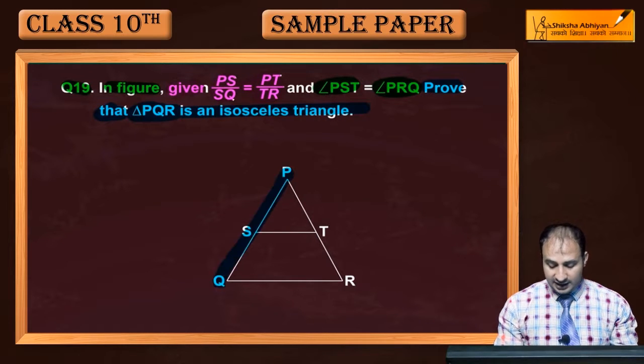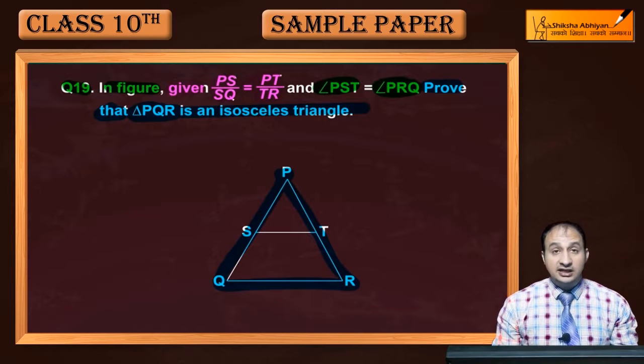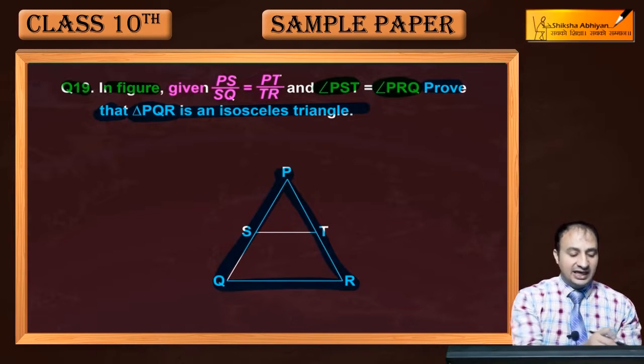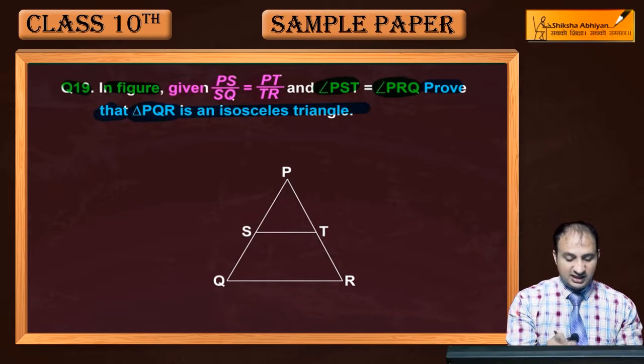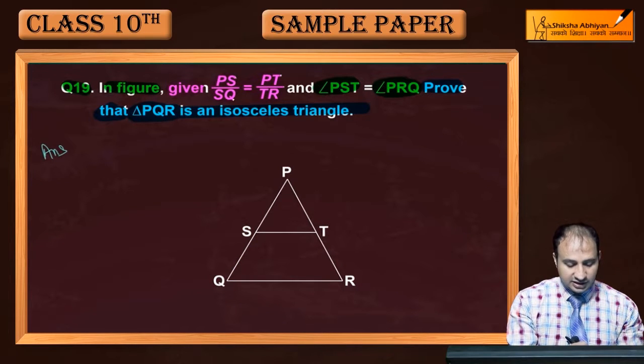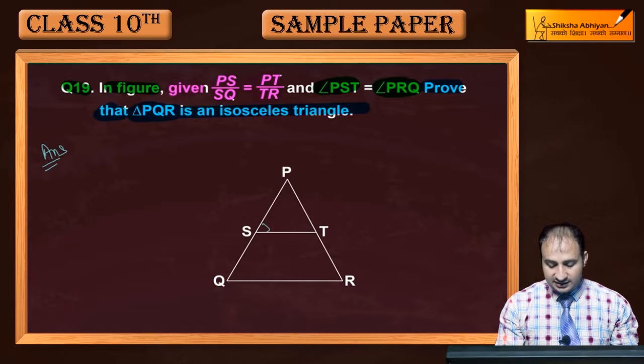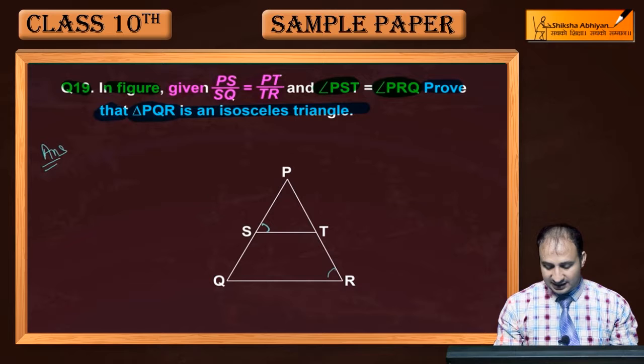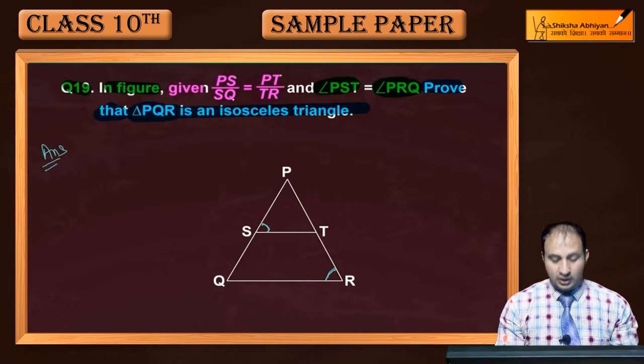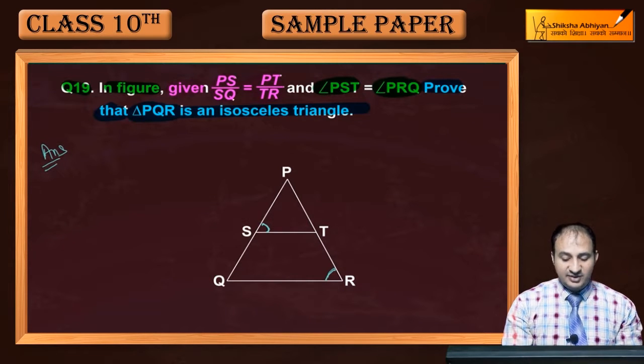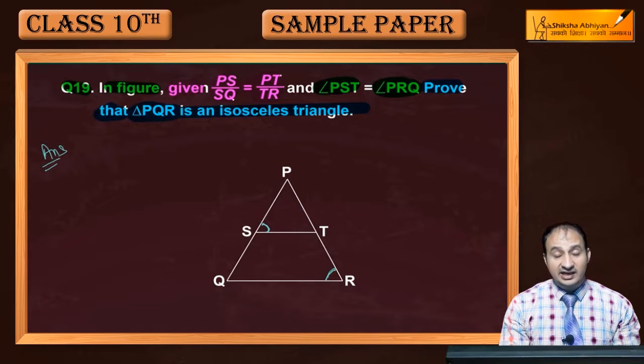The big triangle PQR is as you can see isosceles. How we prove this? First of all, the given information is angle PST is this angle and angle PRQ is this angle. The two angles are equal. Also, PS by SQ is equal to PT by TR. This is given.